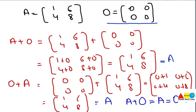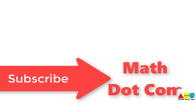So that's all about the additive identity of a matrix. Keep in mind that the additive identity is always zero — in case of real numbers it is a single element, and in case of matrices it consists of rows and columns where all elements are zero, having no effect on the given matrix. Thank you for watching. Please subscribe to our channel for more updates.